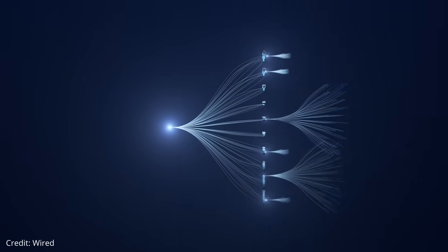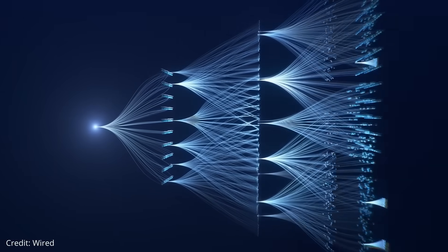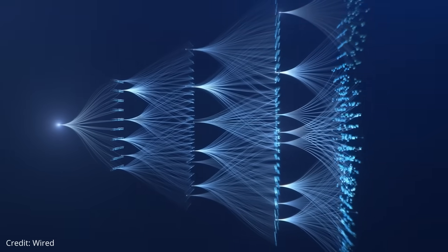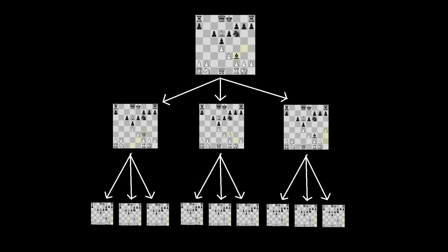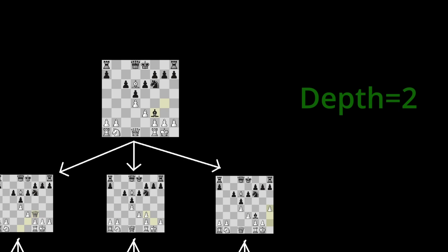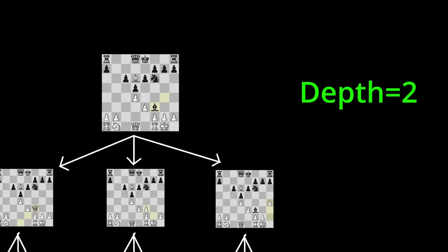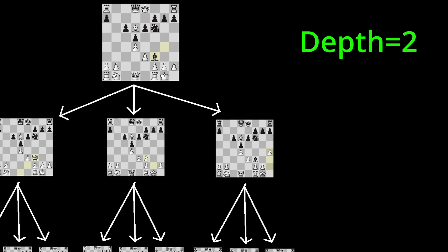But if you let the bot keep going deeper and deeper into the search tree, you'll end up searching more positions than there are atoms in the universe. So Stockfish starts the analysis with a depth parameter that controls how far it will probe into the search tree.